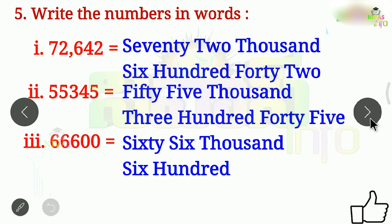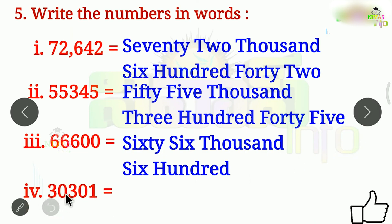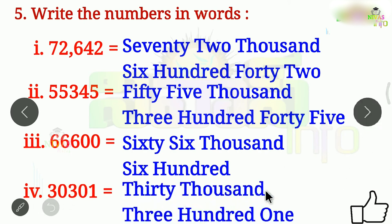Next problem: 1, 10, 100, 1,000, 10,000. The 10,000 place is equal to 3. The 1,000 place is equal to 0. So what we have to do is 30,000. Then 3 is equal to 3 in the hundreds place. 100 plus 1 is equal to 100. In the 10th place it is 0. In the 1s place it is 1. That means 30,000, 300, 1 — giving us 30,301.